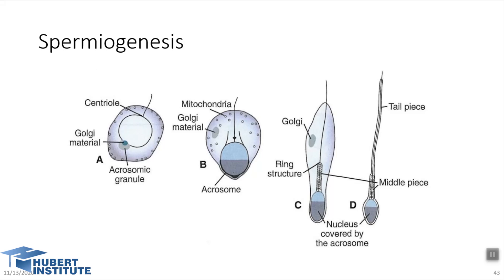The third change in spermiogenesis is formation of the neck, middle piece, and tail. The fourth change is the shedding of most of the cytoplasm as residual bodies, which are phagocytized by Sertoli cells. The spermatids have cytoplasm, but this cytoplasm does not exist in the mature sperm because the excess cytoplasm is phagocytized by Sertoli cells. After this, the sperm is released into the lumen of the seminiferous tubule.